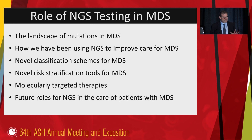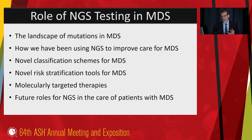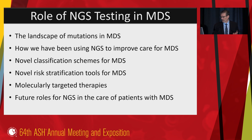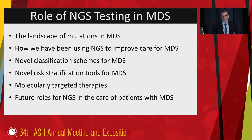What I'll be telling you about today is that we have a pretty good understanding of the genetic landscape for MDS, that we have been using this information to help care for patients, and now we have new tools to help us do this even better. That includes new classification schemes, new risk stratification tools, and in the near future, probably more specific molecularly targeted therapies. I'll end by talking about some future roles that we might use NGS for that have a lot of promise.